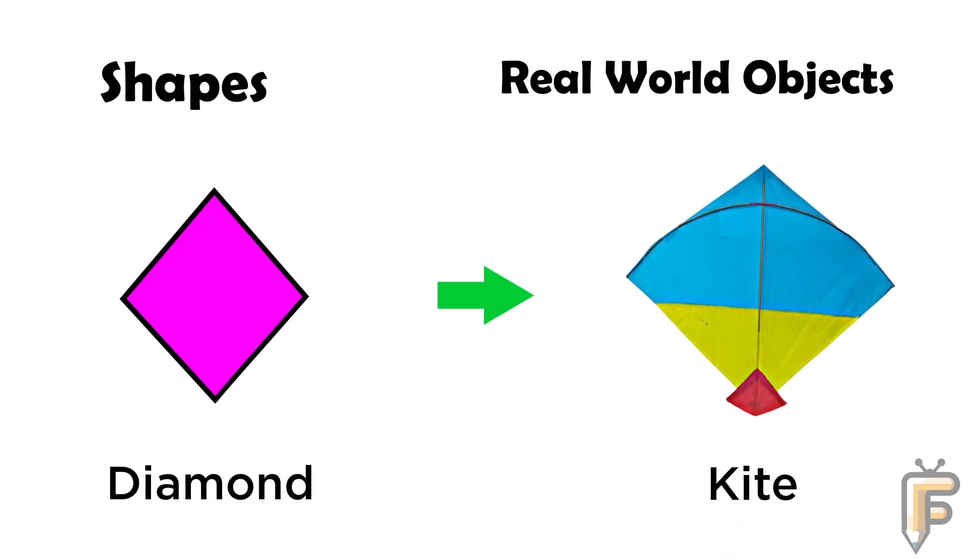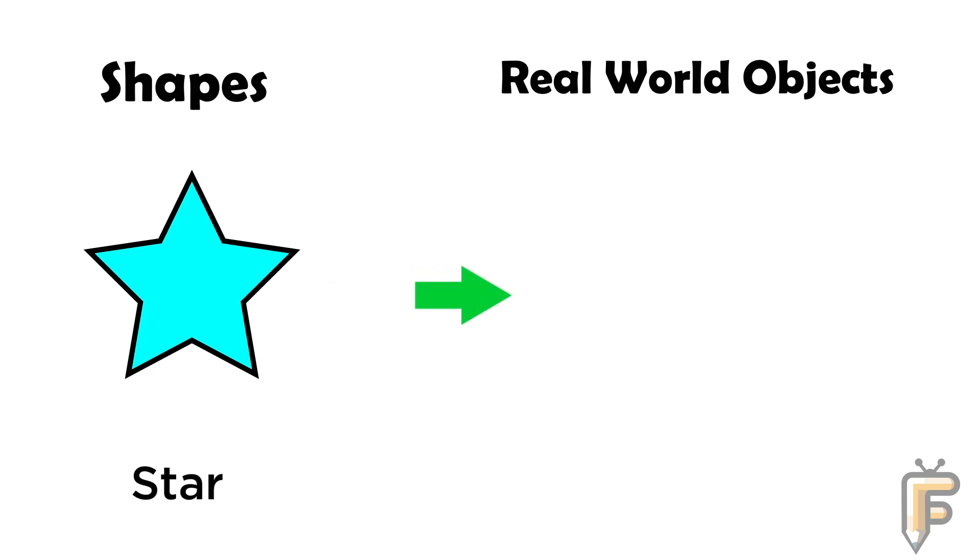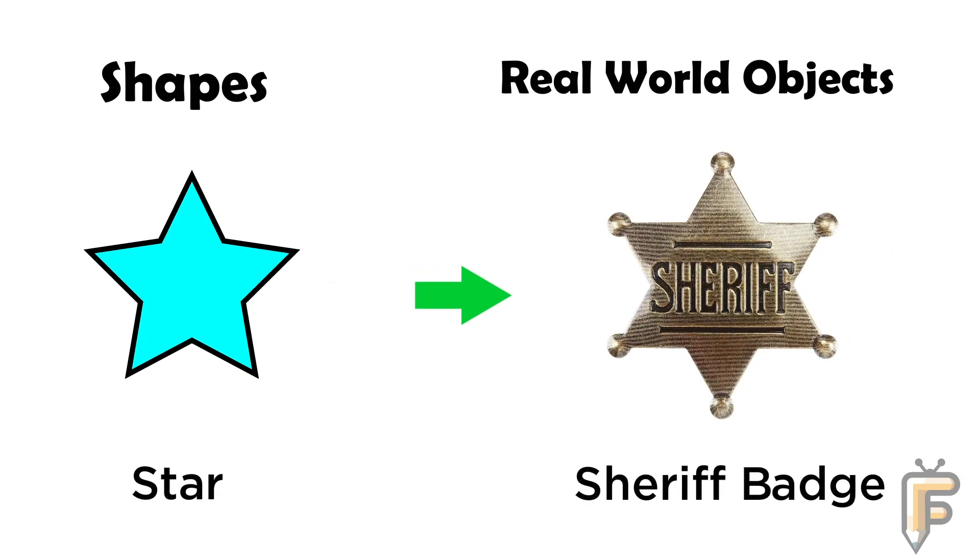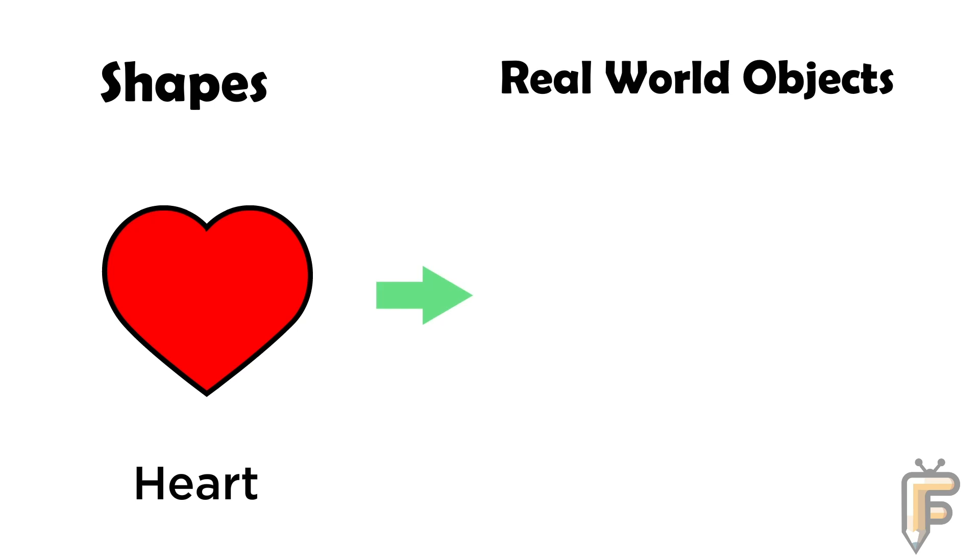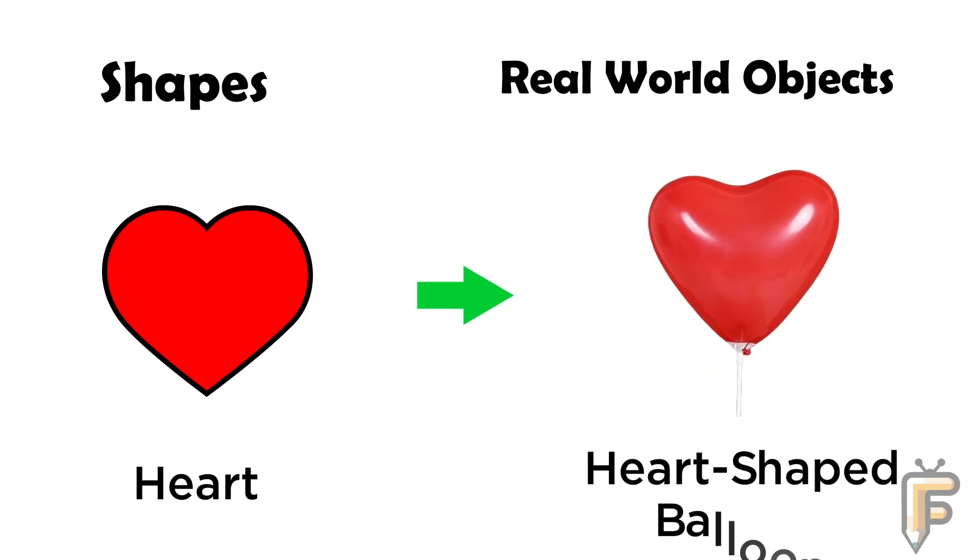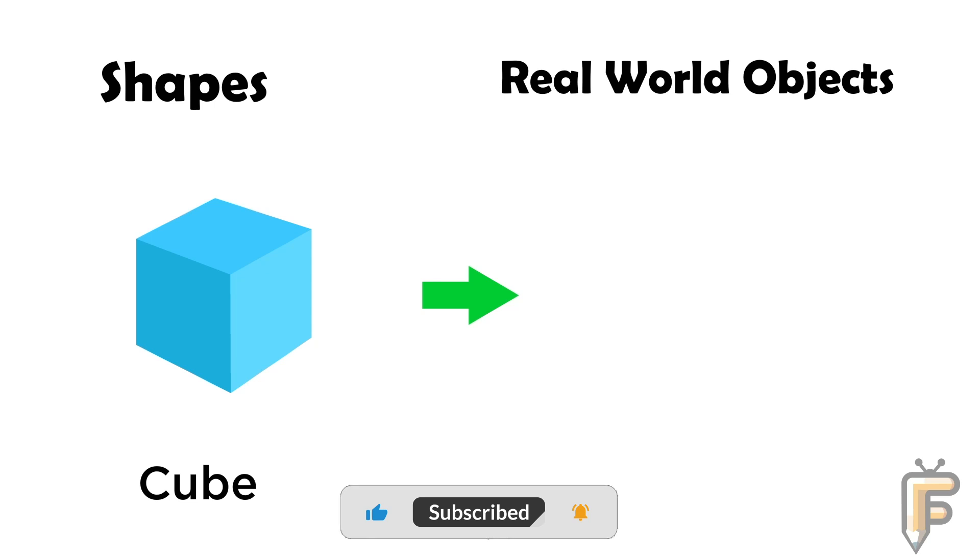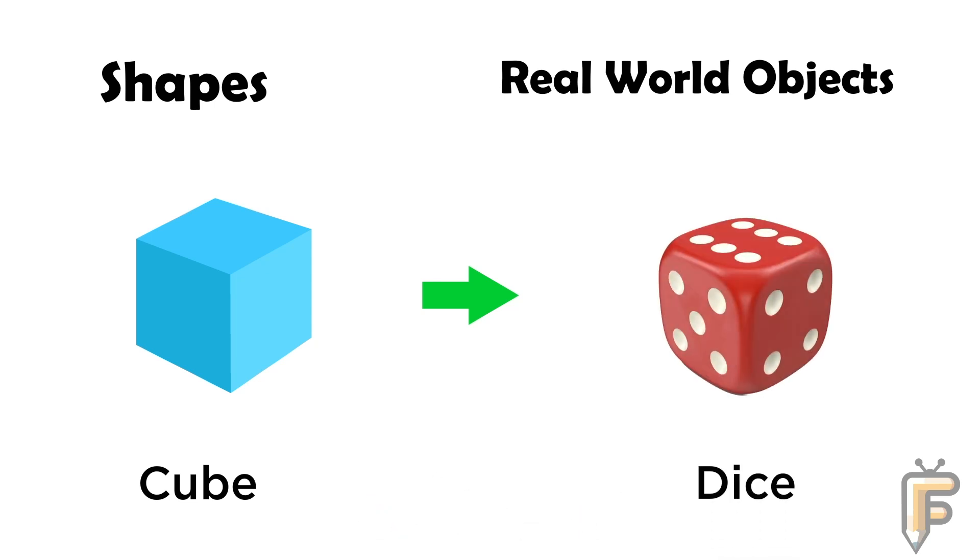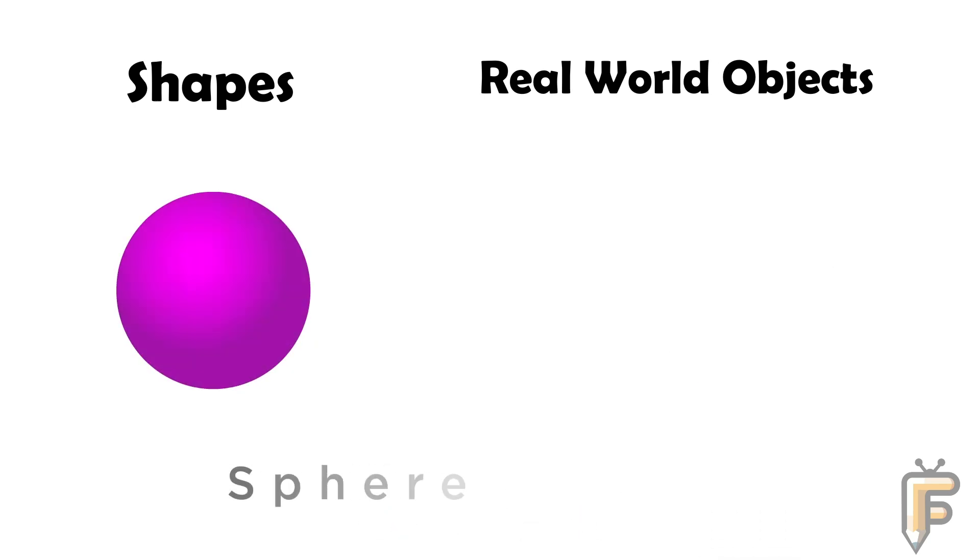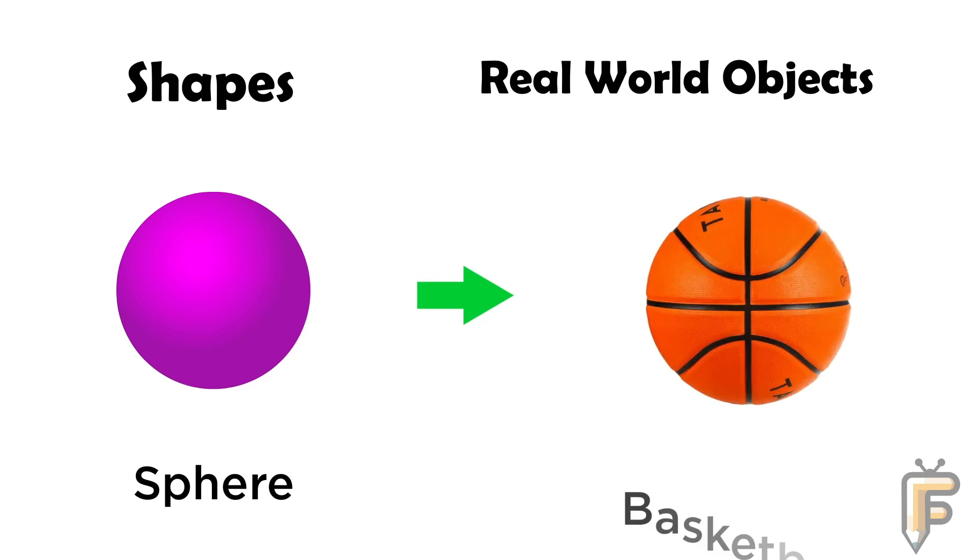Star: sheriff badge is star shape. Heart: heart shape balloon. Cube: dice is cube shape. Sphere: basketball is sphere shape.